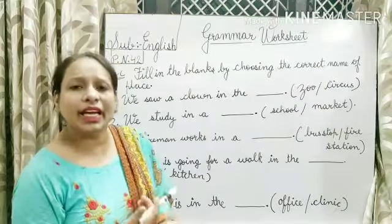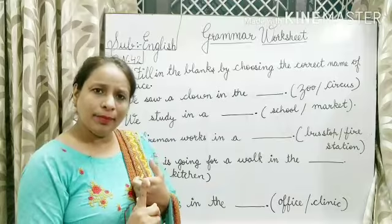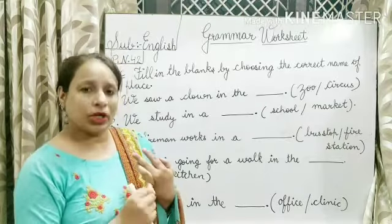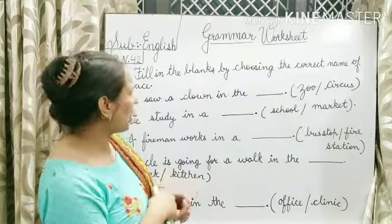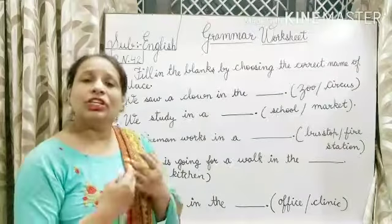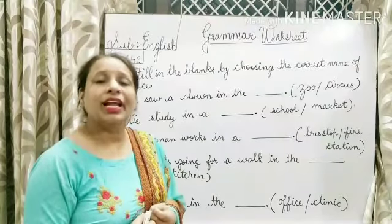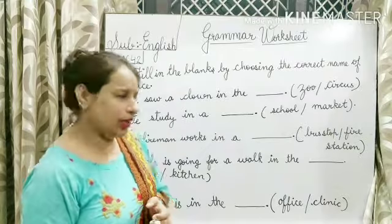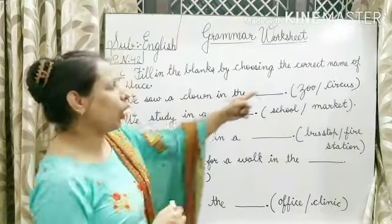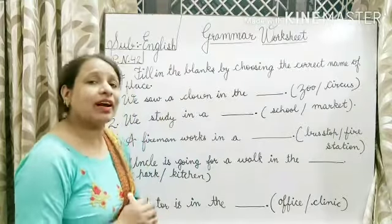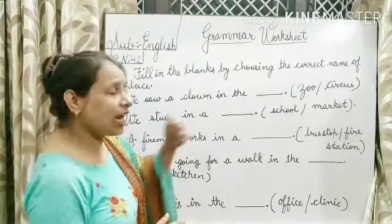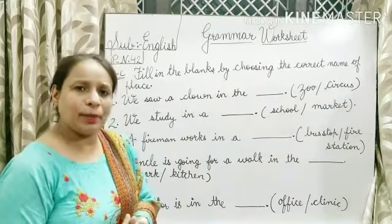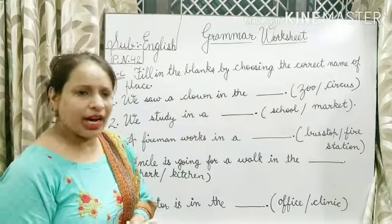Naam waali shabd kya kehte hain? Jagah ka naam, insaan ka naam, janvar ka naam, pashu pakshi ka naam, log ka naam — these are all names. So naming words are nouns. Our names here are given as options. You have to choose the correct option from these and fill in the blanks. In the blanks, you have to write the name of a place — jagah ka naam.